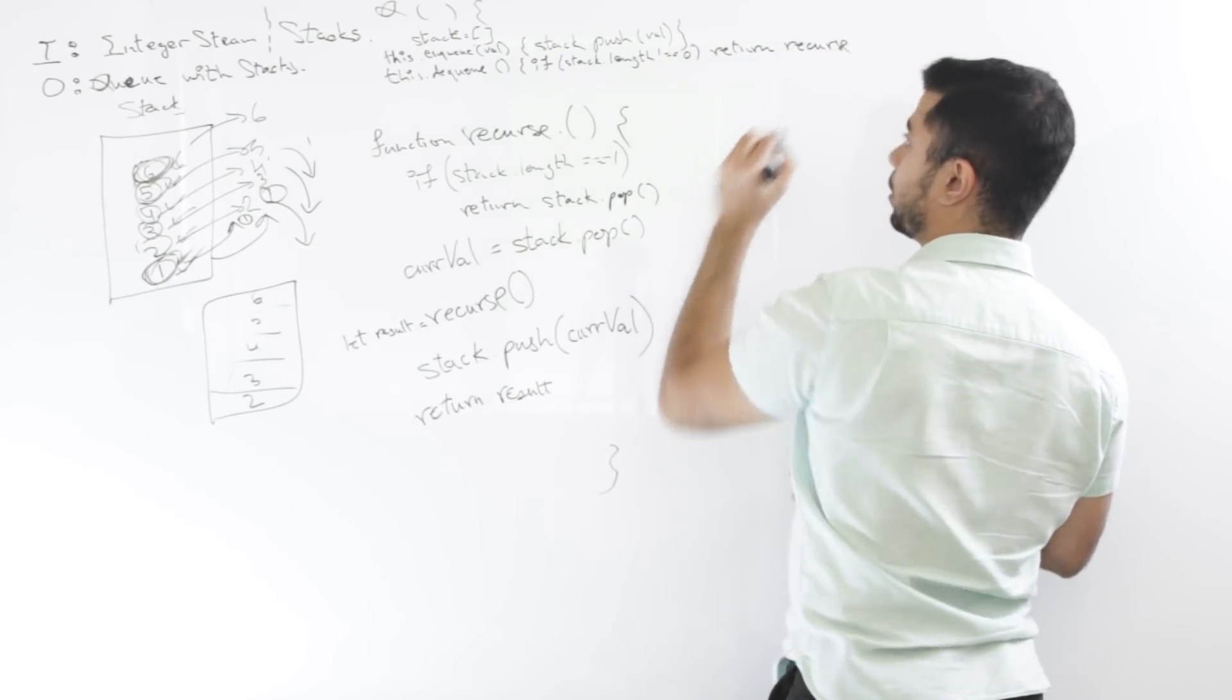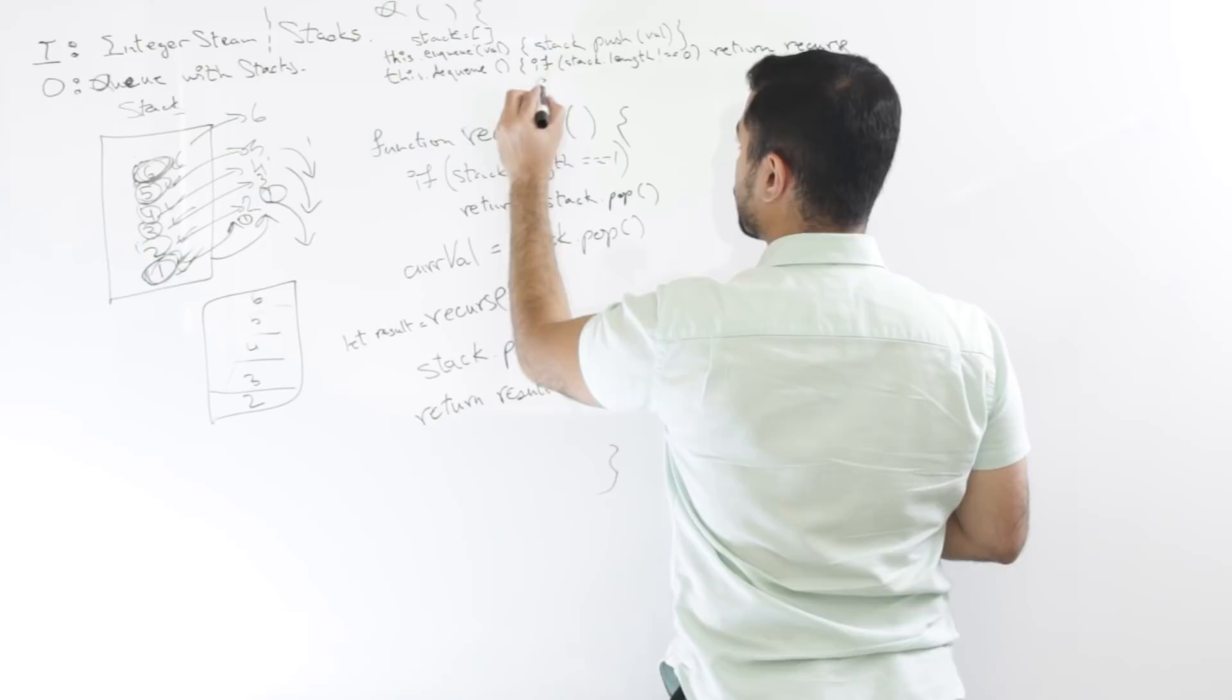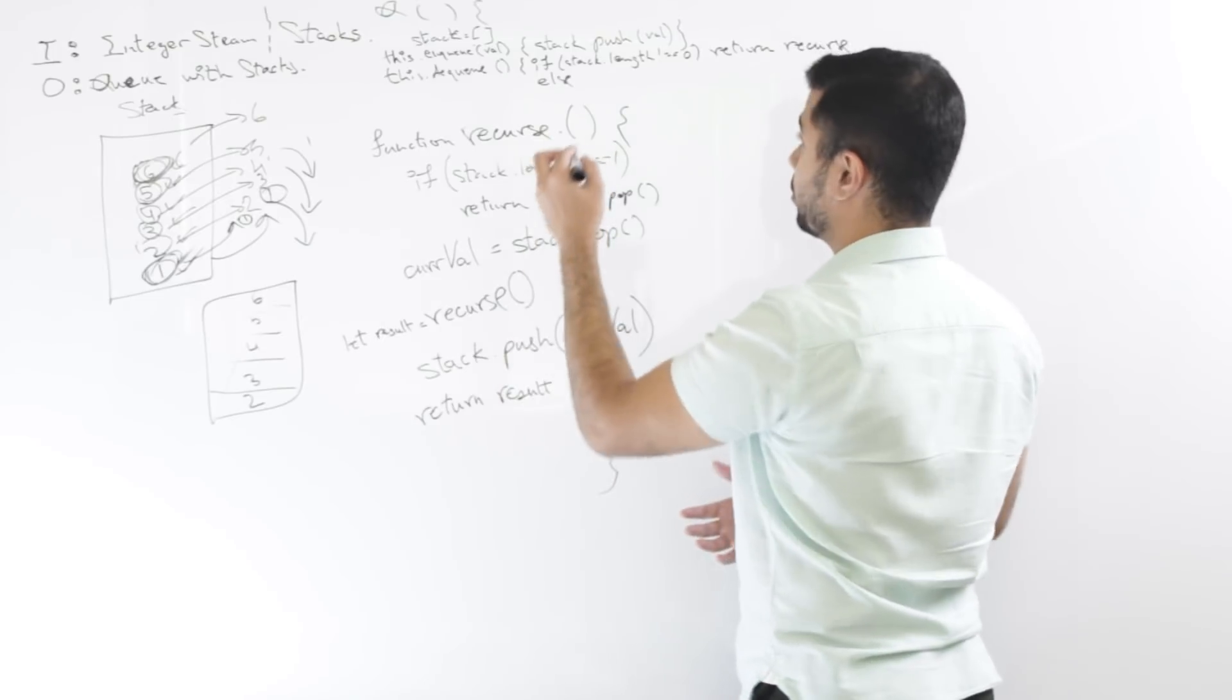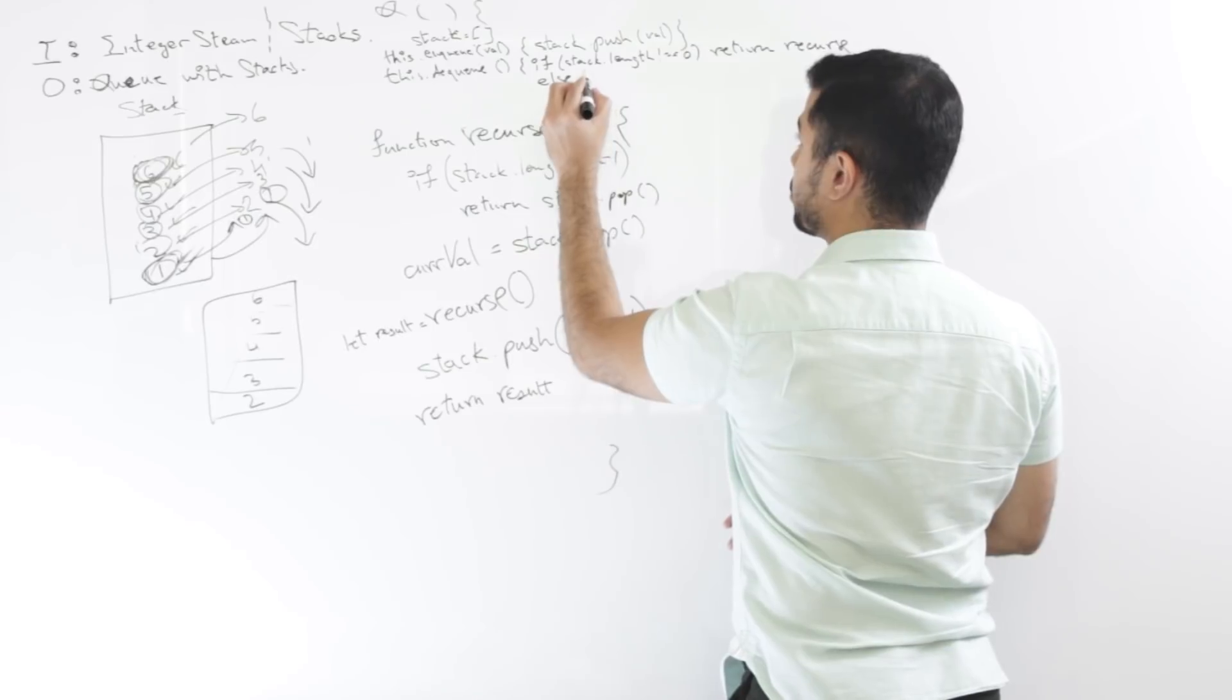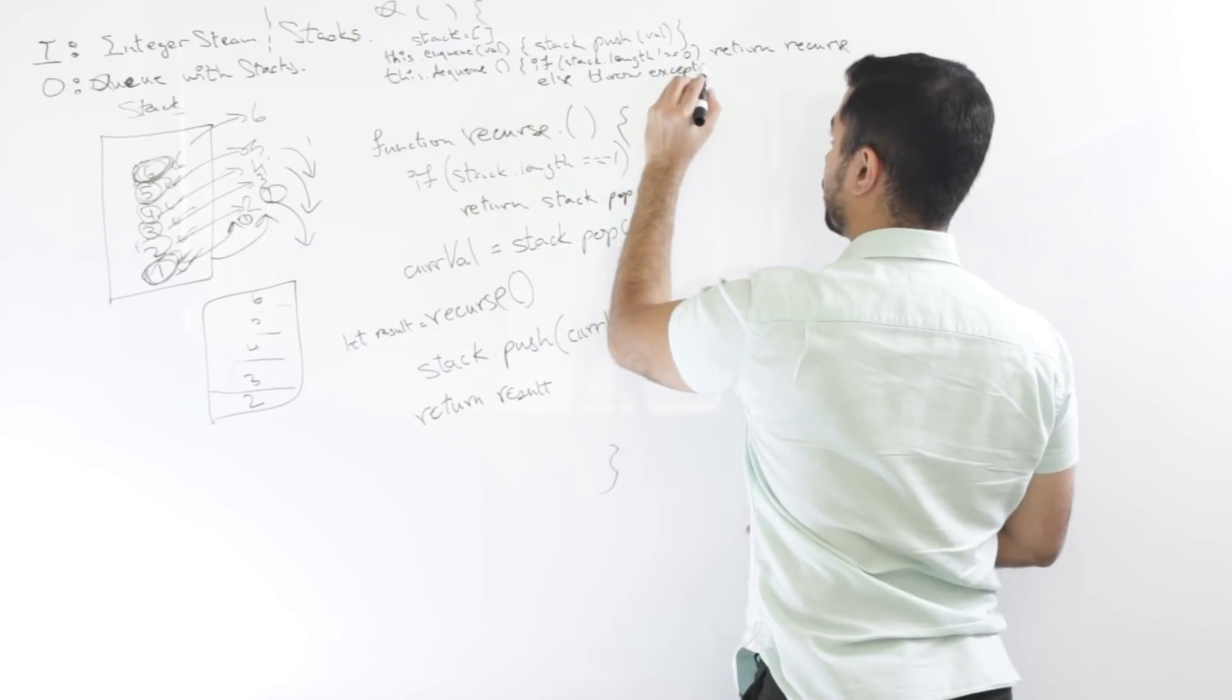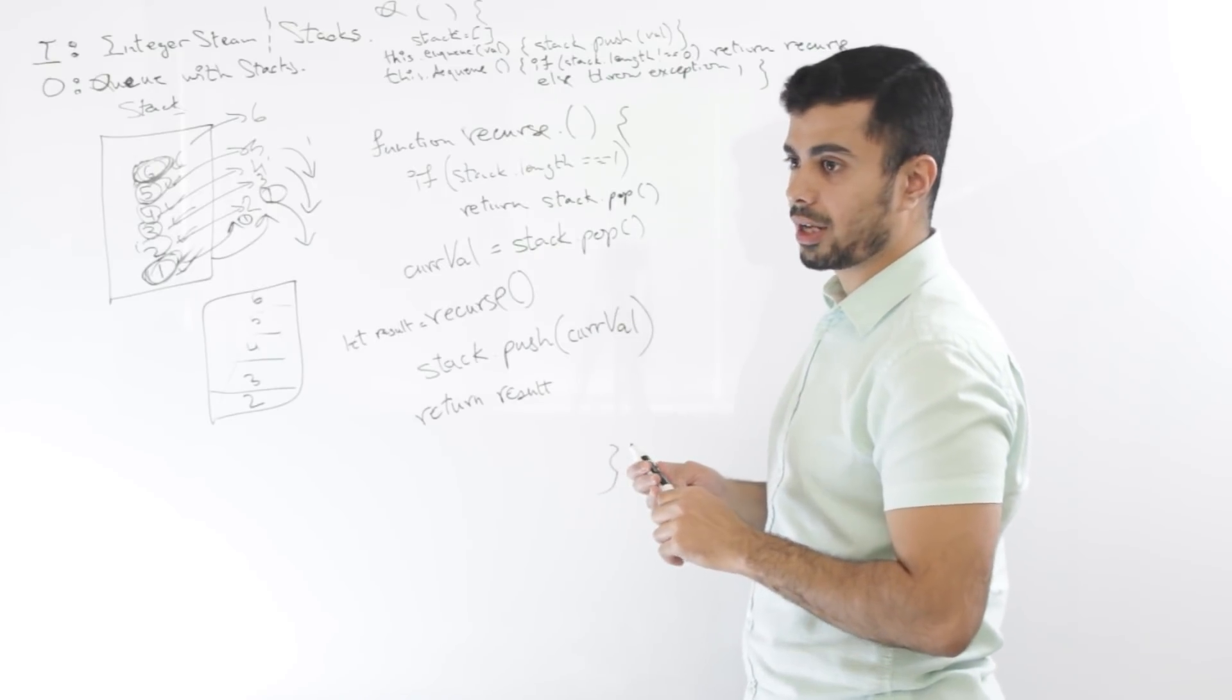So it would basically return the result like we did. Else, else, basically they're trying to dequeue something that's not even there. So depending on what the business logic is, maybe we say return error, you know, else, throw exception. But basically this would, at a high level, be the queue class. Looks good. Perfect.